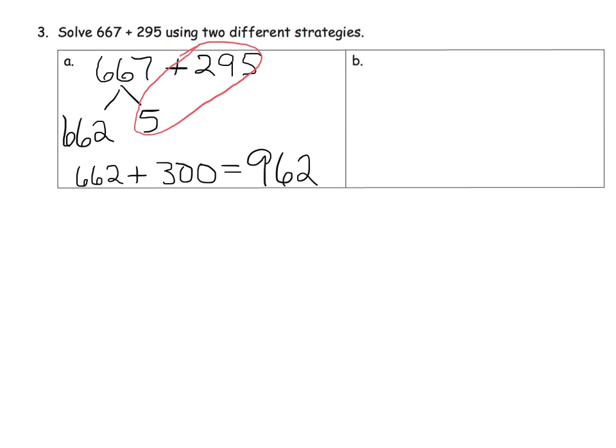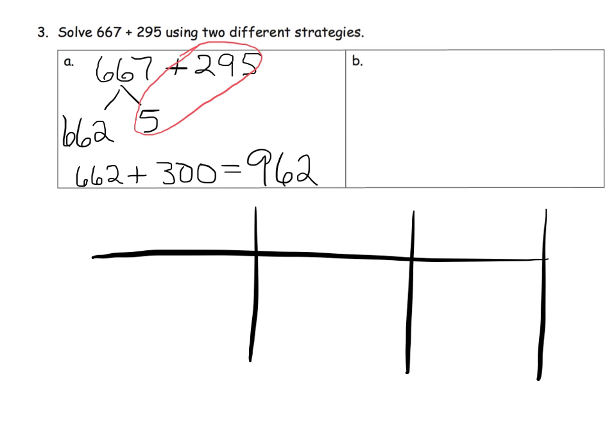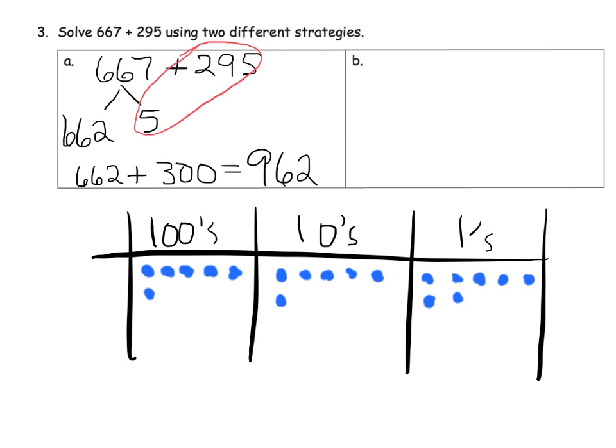Another way to solve this problem would be using number disks and place value. And so I'm going to do it down here because I want extra room. So here's our hundreds. Here's our tens. Here's our ones. I'm going to begin by modeling 667 and I'll do that in blue. So 600: 1, 2, 3, 4, 5, 6. 60: 1, 2, 3, 4, 5, 6. And 7: 1, 2, 3, 4, 5, 6, 7. So there's 667. And now I'm going to model 295. So let's do that in red. So 295 would look like this: 2 in the hundreds, 90 would be 9 in the tens column, and then 5 would be 5 in the ones column.